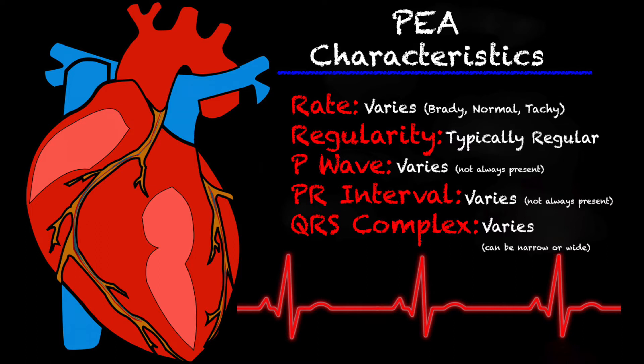Regularity is typically regular. With the P waves, they could vary — they may not be present, or they could be present and upright. It could even be a heart block where there are more P waves than QRS complexes. Your PR interval varies as well, because the P waves may not always be present. You could have an idioventricular rhythm or another junctional rhythm of some sort. Your QRS complexes vary as well — they can be narrow, wide, or normal. But the one thing that's always the same: it's never going to have a pulse.